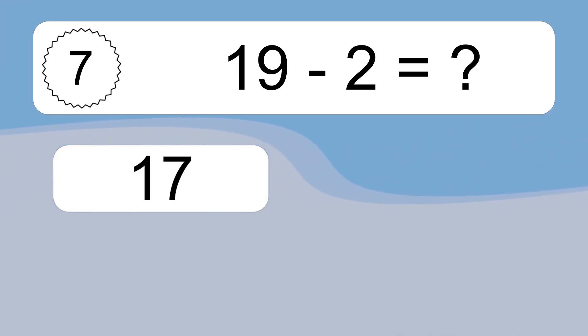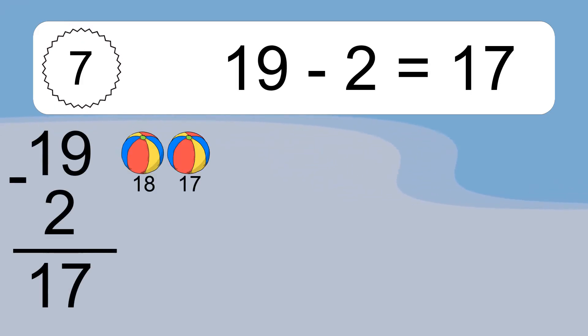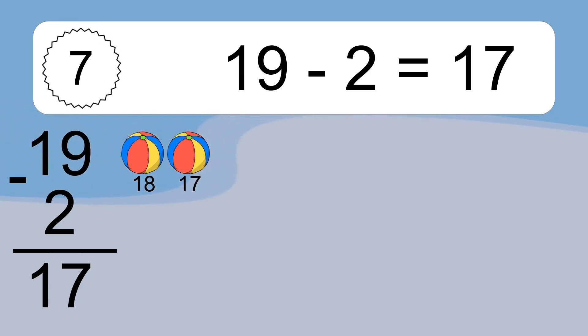19 minus 2 equals 17. Let's count it. 18, 17.